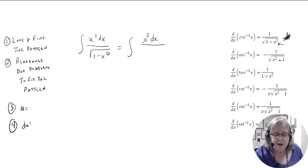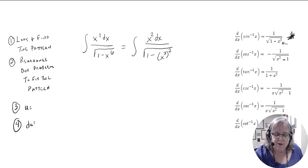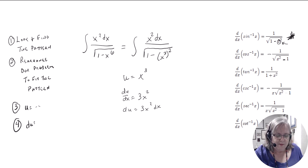The problem is this pattern has x squared and I have x to the sixth. So I need to rearrange, modify, or factor to see if I can get it into that pattern. Could I make x to the sixth look like something squared? Yes — x cubed squared fits that pattern. So u would be x cubed, the part you're going to square. Taking the derivative with respect to x gives 3x squared, so du is 3x squared dx.